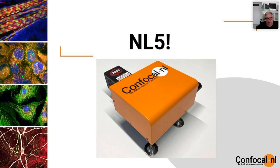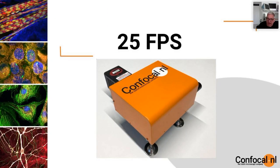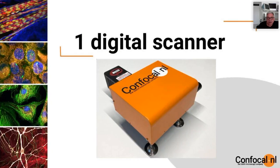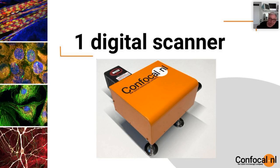The NL5 uses a camera detector and is designed to work at a fixed scanning speed of 25 frames per second full frame. It uses one digital scanner — utilizing two zones on the scanner from the front side and back side, similar to the Meridian design. A different scanner angle position allows a bypass mode, so the scanner has three functions: directing excitation light, directing emission light, and directing all light in bypass. A very smart, modern design.